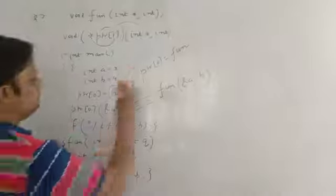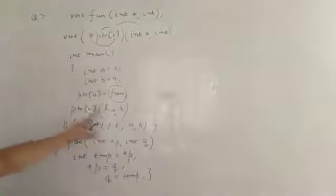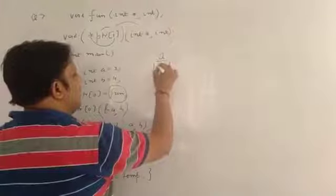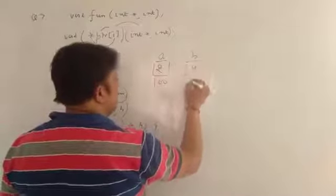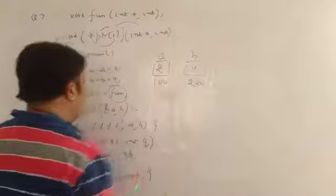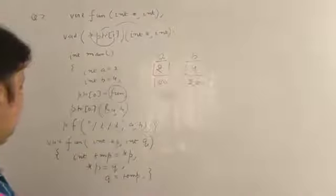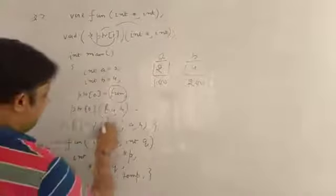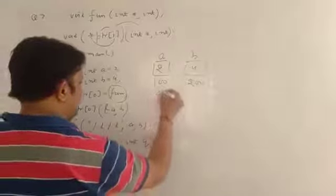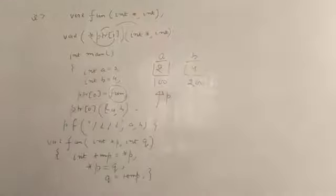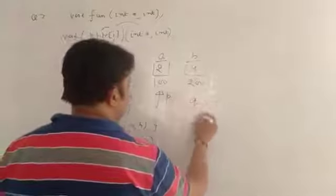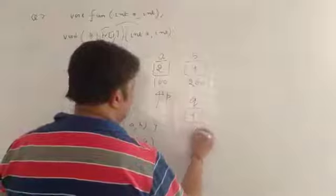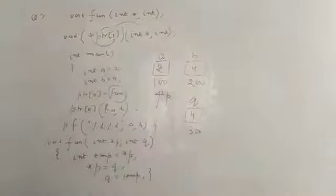So just like ptr[0](address of a, b), so a value is 2 so it is 100, b value is 4 so it is 200. Now you have passed the address of a, b, so address of a star p, so you have p pointing to 100 and q is address of b, so you have q value is 4.